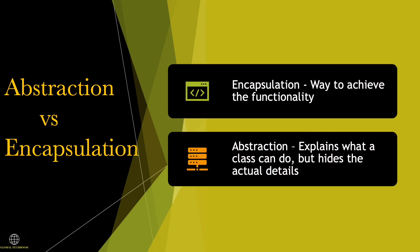With the help of encapsulation, we can apply data abstraction. Encapsulation is the way to achieve functionality, and abstraction hides the implementation details of the object. Abstraction explains what a class can do, but it hides the actual details.